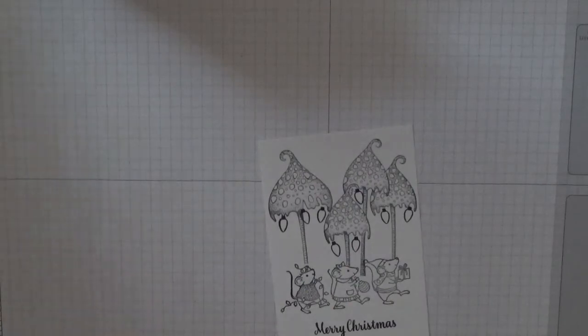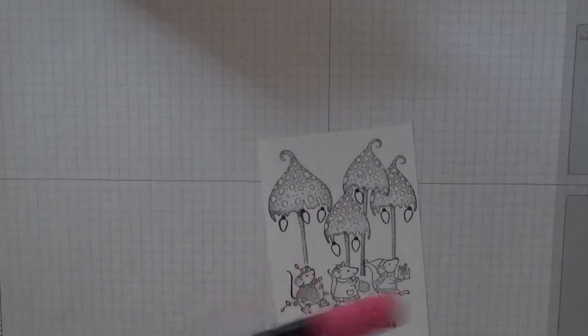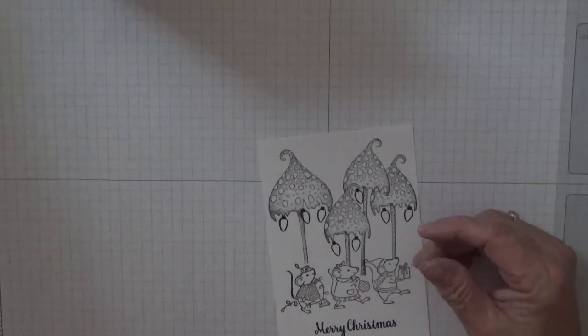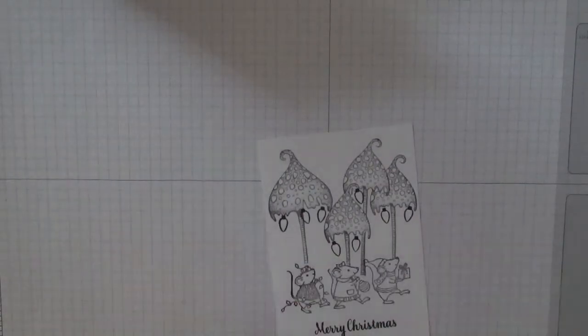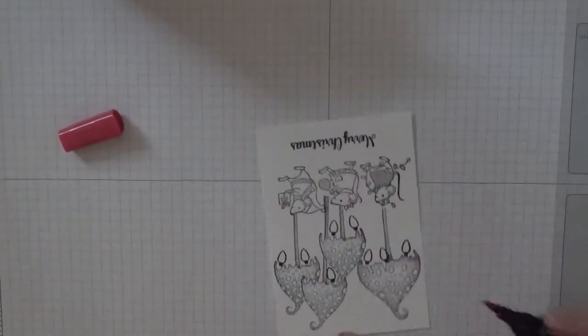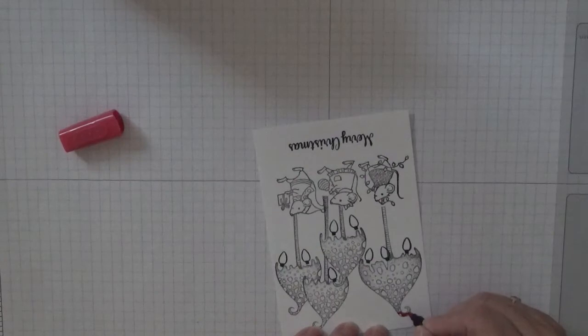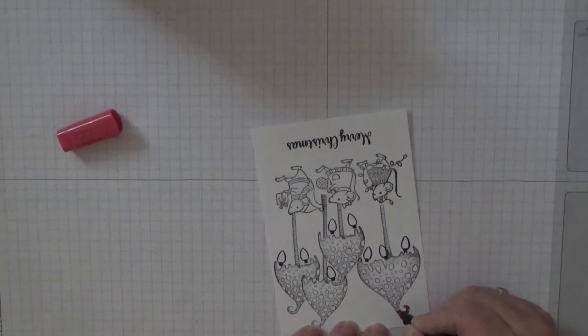To get this started, we're going to color our mushroom in real red, darkest light. This will take a while because I've got to go around all the white dots.